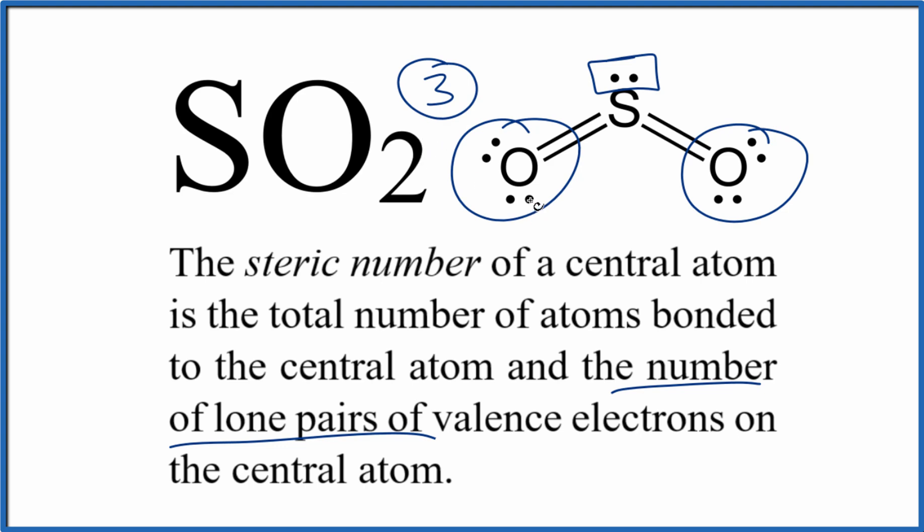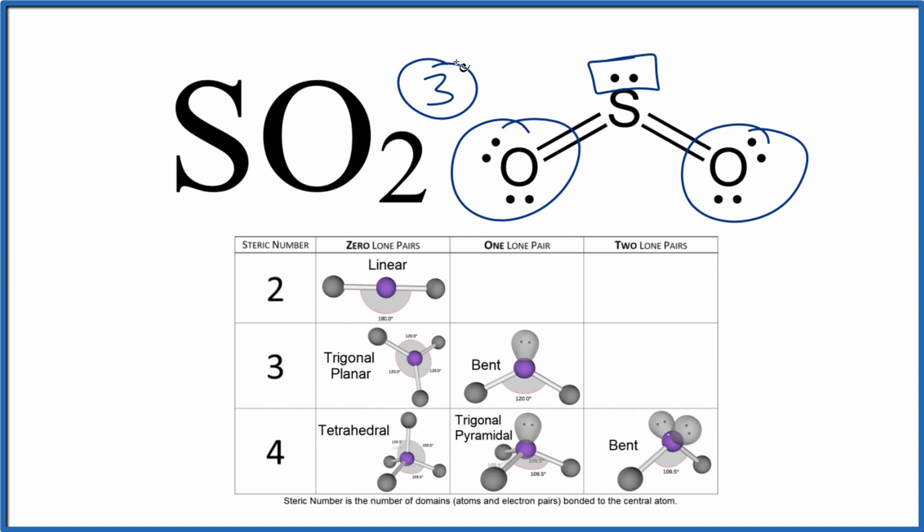And we can use that to determine the molecular geometry for SO2. So we have a steric number of three here, and we have just one lone pair, one lone pair here. So we go over and we see that for SO2, we have this bent molecular geometry.